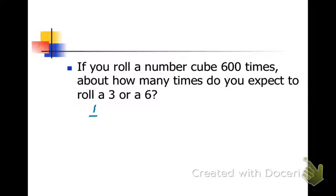Probability of rolling a three is one out of six. Probability of rolling a six is also one out of six. So since we expect to roll a three or a six two out of six times, we use that information.